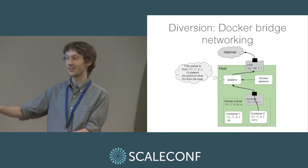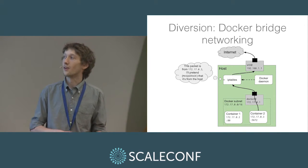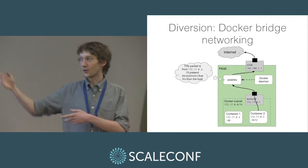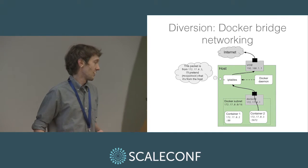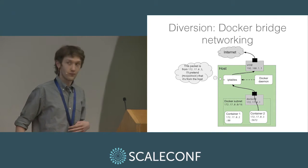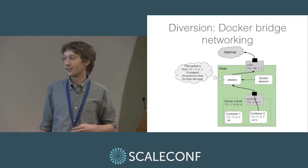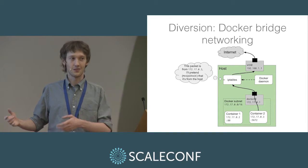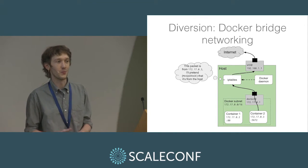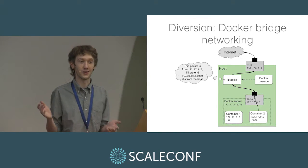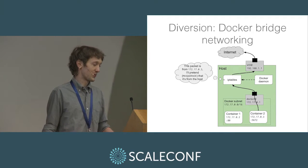Going the other way around, a similar thing happens: the connection comes out of the container, but the address for the container doesn't make any sense outside of the host itself because it's a local subnet. So the packet is basically mangled by iptables to say this actually comes from this host. Basically, the containers don't really have IP addresses that you can access from anywhere else in the cluster, at least in Docker's default networking mode.